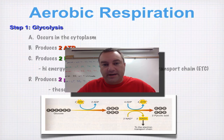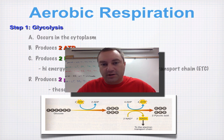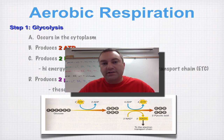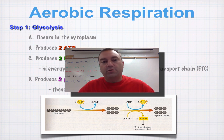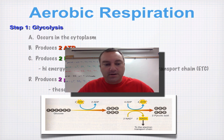Welcome to episode three from chapter nine. In this episode, we're going to cover the first step of cellular respiration called glycolysis. Remember, this is the only step that occurs in the cytoplasm. The other two steps will occur inside the mitochondria.